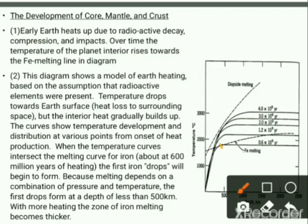When the temperature curve intersects the melting curve for iron, about 600 million years ago, the first iron drops begin to form. The first iron drop forms at a depth of 500 kilometers, since melting is a combination of temperature and pressure.